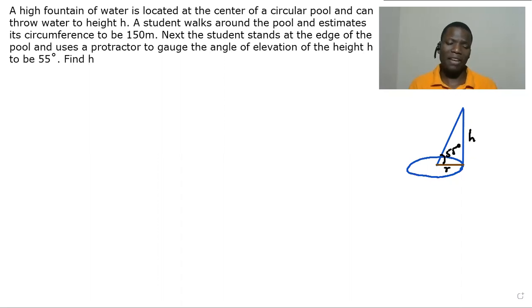A fountain, a high fountain of water, is located at the center of a circular pool and can throw water to height h. A student walks around the pool and estimates its circumference to be 150 meters. Next, the student stands at the edge of the pool and uses a protractor to gauge the angle of elevation of the height h to be 55 degrees. Find h.